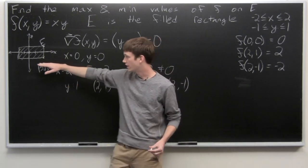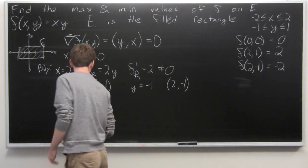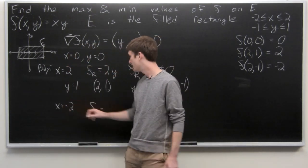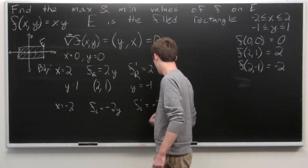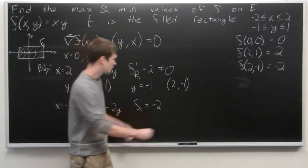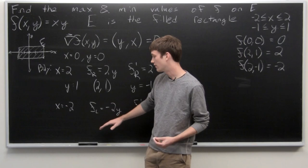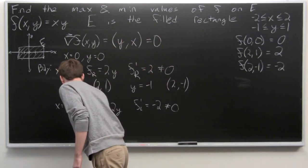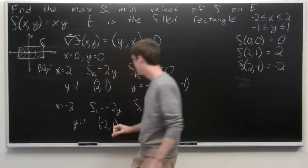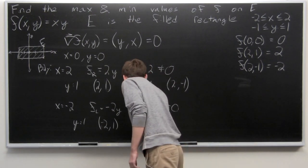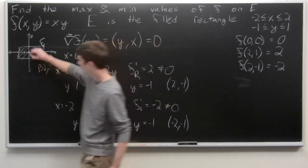Now we check when x equals negative 2. We have f_left equal to negative 2y. The derivative is negative 2, so we have no critical points on f_left. We check its boundary: when y equals 1 we have the point (-2,1), and when y equals negative 1 we have the point (-2,-1).